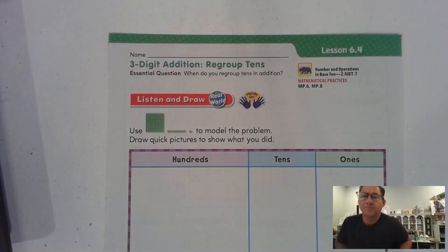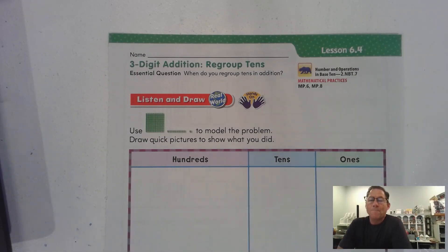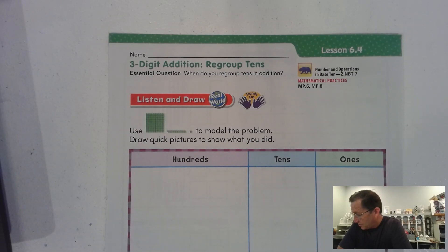Hello, in today's video, Lesson 6.4, we're going to be covering three-digit addition regrouping tens. We're on page 293 of the second grade GoMath textbook.